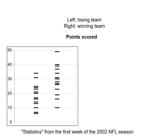Let's look at some examples from NFL football from the first week of the 2002 season. We're trying to figure out what causes a team to win or lose. In each of these plots, the teams on the left are the losing teams, the teams on the right are the winning teams, and the y-axis shows points scored. It kind of looks like losers generally had fewer points than the winners, but it's not totally conclusive.